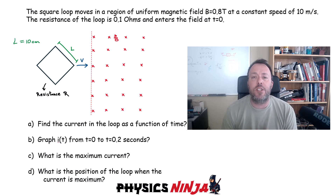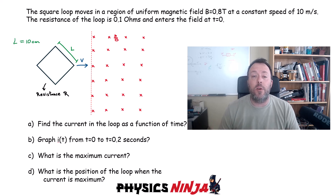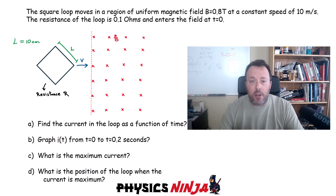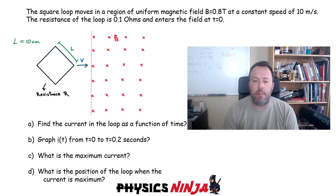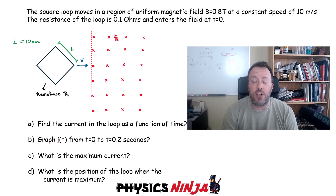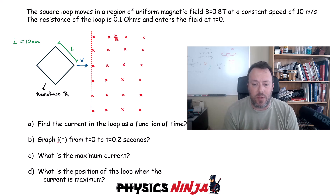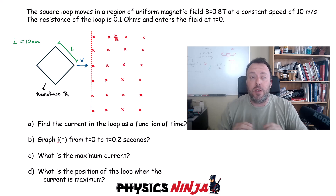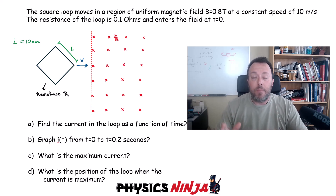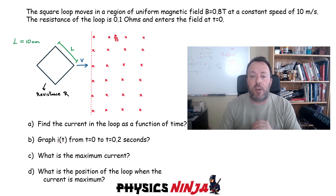We've got four questions to look at today. We're going to first find the current in the loop — there is going to be an induced current — let's find the direction and the magnitude as a function of time. Next we'll make a quick sketch of what that current looks like as a function of time from t=0 to 0.2 seconds. I'm also interested in the maximum current and the position of the loop when you get that maximum current.